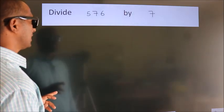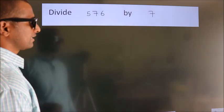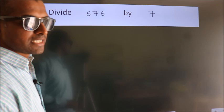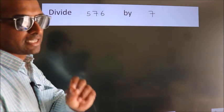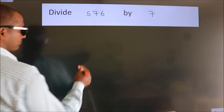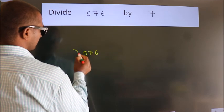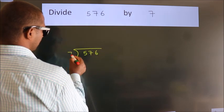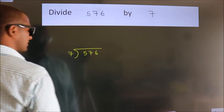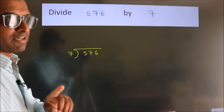Divide 576 by 7. To do this division we should frame it in this way. 576 here, 7 here. This is your step 1.